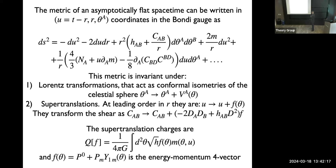Once we have symmetries, we also have the generators — the charges associated to these symmetries. In particular, the supertranslation charges are given by this formula. F is a function on the celestial sphere, so it can be expanded in spherical harmonics, giving an infinite number of charges Q. The first four — the S-wave and P-wave — are particularly interesting because they correspond to the energy and the angular momentum of the spacetime. So we recover known quantities in this format.